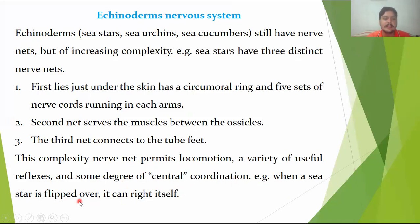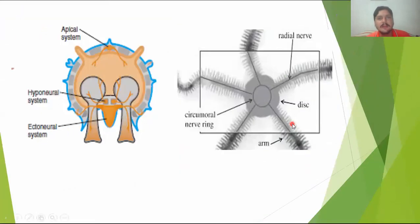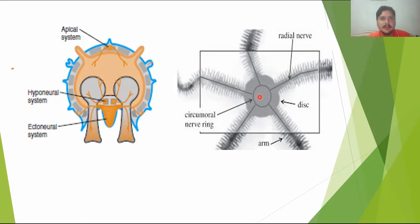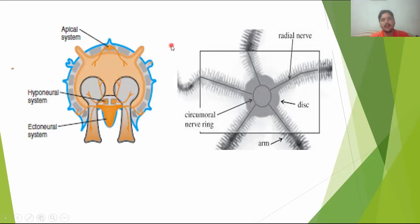The entire nerve net handles locomotion, body reflexes, and higher degrees of central coordination — for example, when a starfish flips, it can turn back. In the brittle star, there is a circumoral ring similar to that of the starfish, located around the ring canal of the water canal system. The nerve net here includes apical systems, hyponeural systems, and ectoneural systems, and these systems are also present in the tube feet.